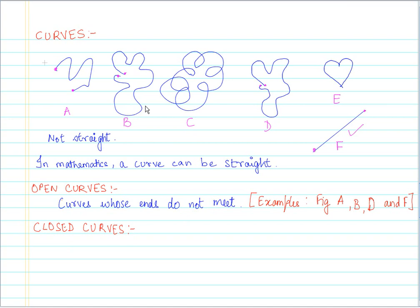Now, examples of closed curves. So, if you see this C, figure C and figure E, right? It's just not possible for us to find out the ends of a curve after the curve is drawn. Or, we can also say that the two ends of closed curves are joined. So, let us define this: curves whose ends are joined. And the examples for this are figure C and E. These are the examples of closed curves.